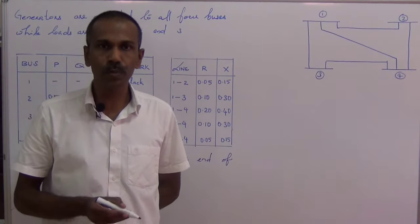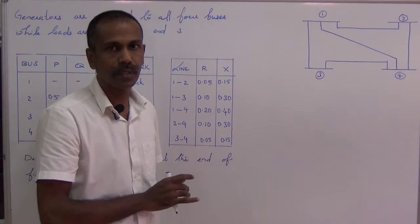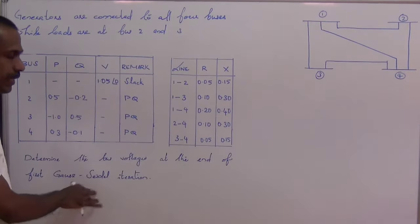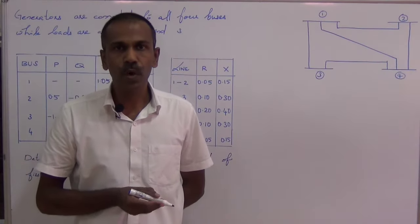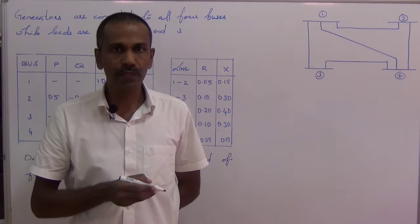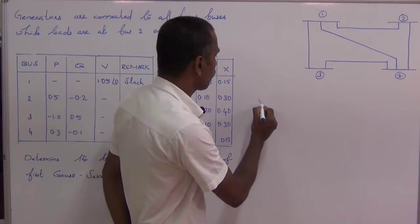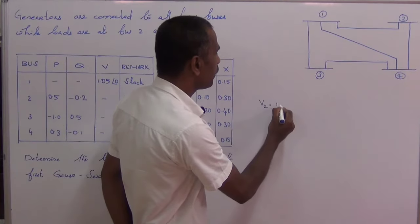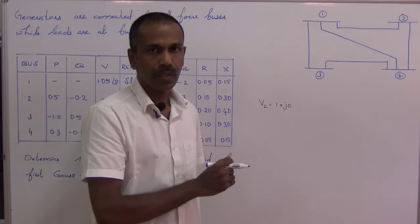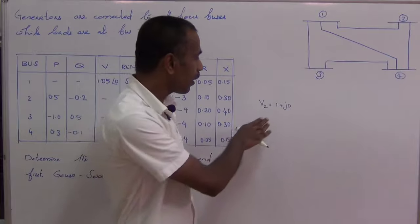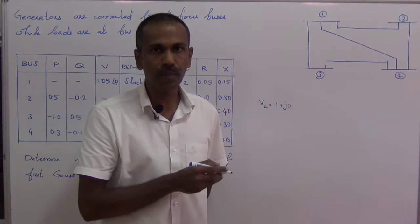In this session, let us solve a numerical problem on the load flow analysis of a 4-bus power system using Gauss-Seidel iteration. These iterative methods are used to solve non-linear equations. In the iterative method, we start with an assumption or a guess. For example, the bus voltage V2 equals 1 plus J0. At the end of the first iteration, this voltage will be modified and we get closer to the actual value by one step.